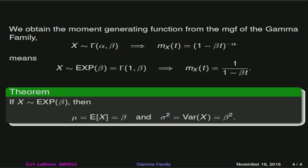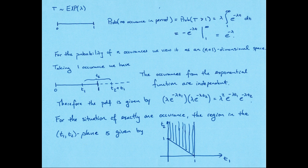One important connection the exponential family has is to the Poisson family. Recall that the Poisson distribution models the number of occurrences given that they happen at a particular rate. The exponential family then models the time between consecutive occurrences of a Poisson process. Let's see why that is true.